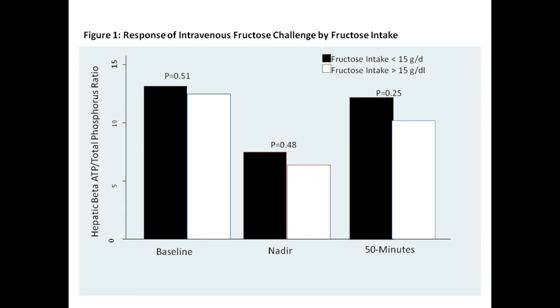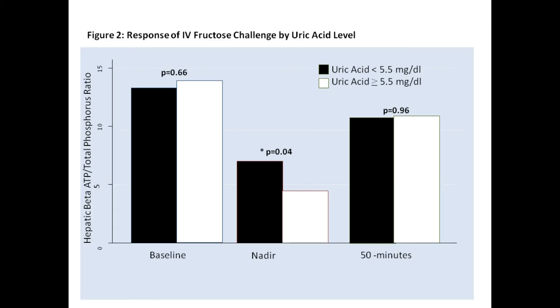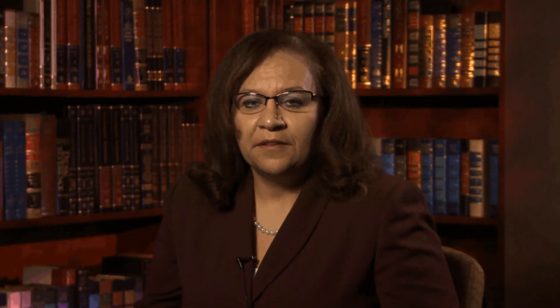Higher fructose consumption in the diet correlated with impaired recovery following an intravenous fructose challenge. This impaired recovery was associated with higher levels of uric acid, suggesting that either increased fructose consumption or uric acid levels can predict impaired energy homeostasis in the liver. Such a mechanism may underlie the pathogenesis or potential for disease progression in patients with non-alcoholic fatty liver disease.